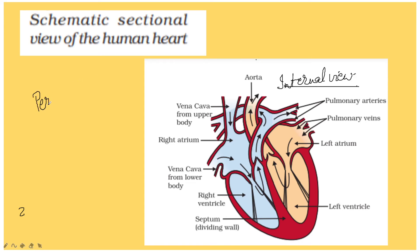The heart is enclosed in a double-layered membranous sac called the pericardium, which protects the heart from mechanical injuries. Externally, the heart is a four-chambered organ divided by septa into two halves. There are upper small-sized auricles and lower large-sized ventricles.